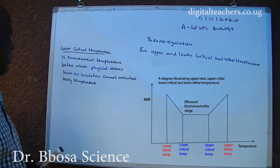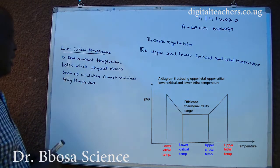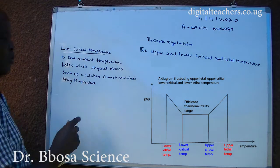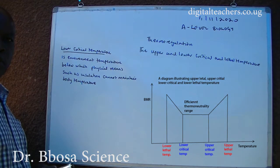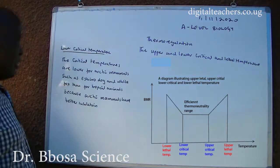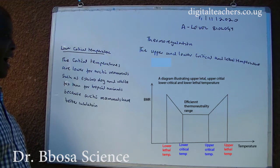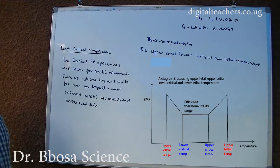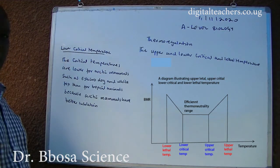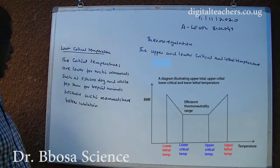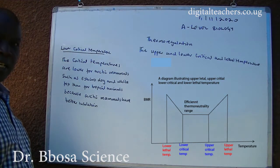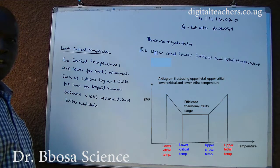The lower critical temperature is the environmental temperature below which physical means of heat conservation cannot maintain body temperature. It is lower for Arctic mammals such as the Eskimo dog and white fox than for tropical animals, because Arctic mammals have better insulation.